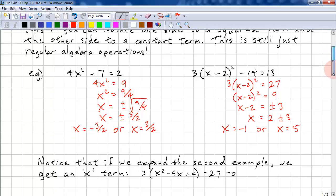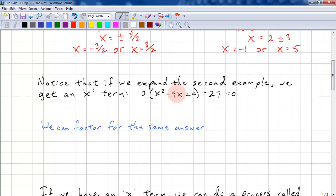So if we expand, we get this. And if we expand again, we get 3x squared minus 12x plus 12 minus 27 equals 0. And we get 3x squared minus 12x. 12 minus 27 is minus 15. And now we can factor, and we should get the same answer.